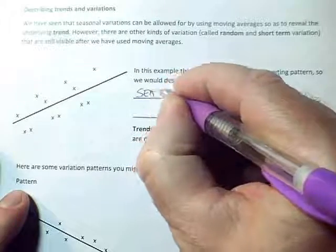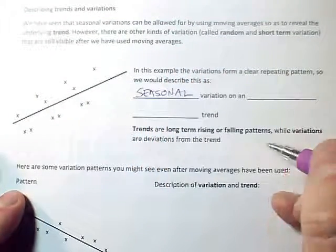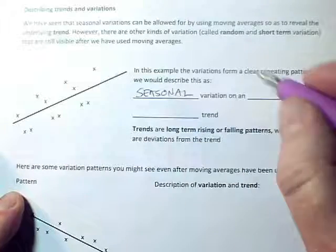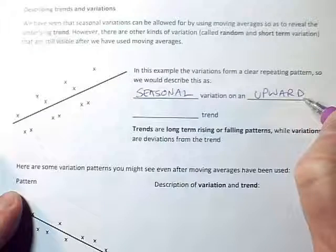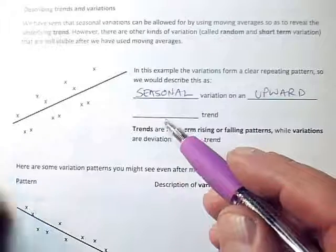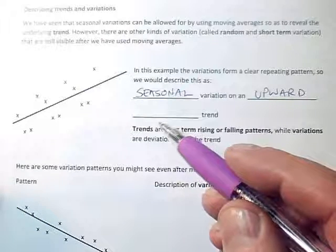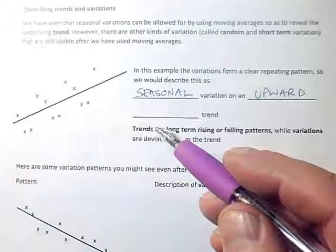So we can put seasonal variation on an upward, so it's either going to be upward or downward here, and then we have to decide whether the trend is linear or not.